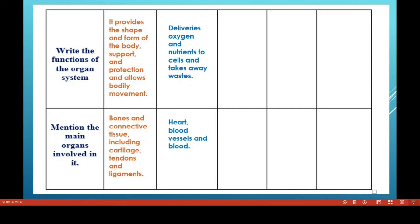The third system is the respiratory system. Its function is breathing — gas exchange. We inhale oxygen and exhale carbon dioxide. While inhaling, oxygen enters through the nose, passes through the trachea, and reaches the lungs. The lungs exchange oxygen into the blood, which then carries oxygen to all parts of the body cells, while also carrying deoxygenated blood back from the body cells. The organs involved are the lungs, trachea, and nose.